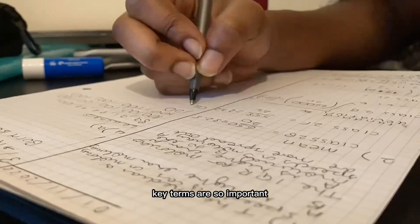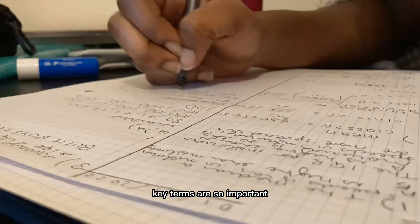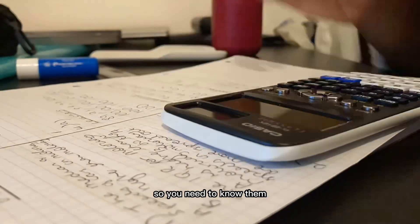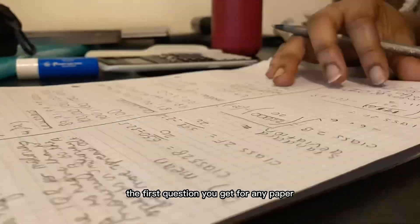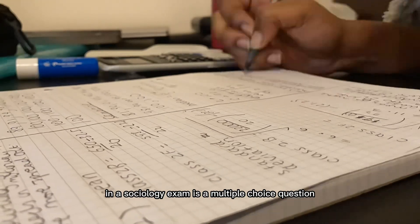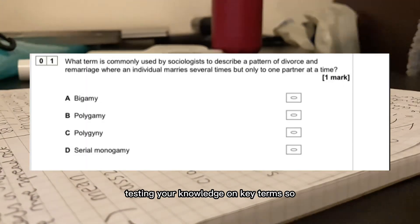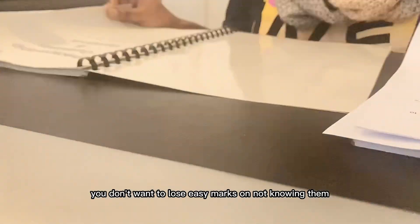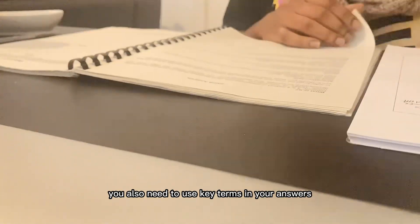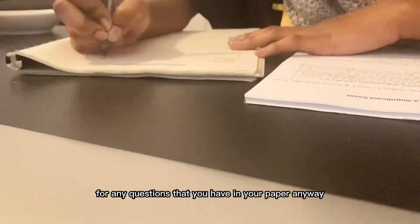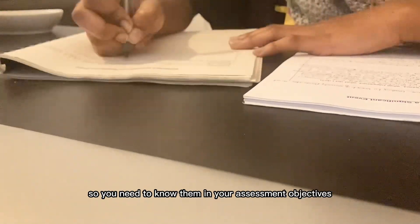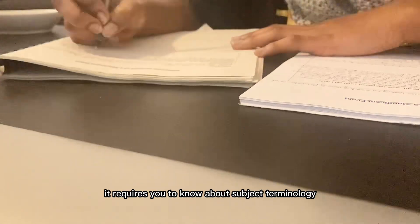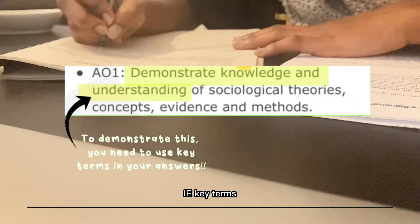For sociology, key terms are so important. They literally build up the foundation of everything you need to know. The first question you get for any paper in a sociology exam is a multiple choice question testing your knowledge on key terms, so you don't want to lose easy marks on not knowing them. You also need to use key terms in your answers for any questions that you have in your paper. In your assessment objectives, it requires you to know about subject terminology, i.e., key terms.